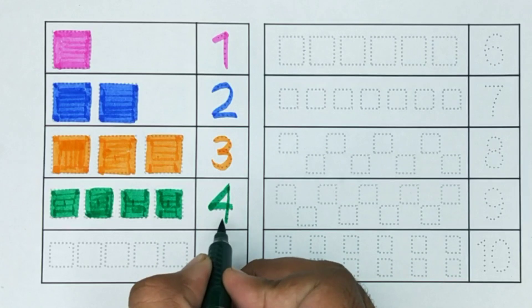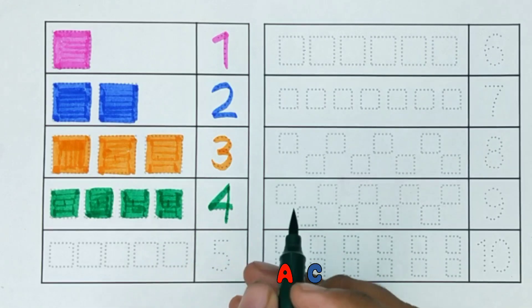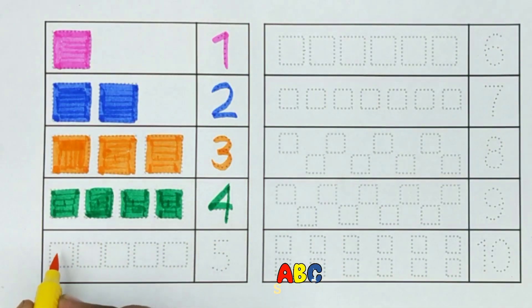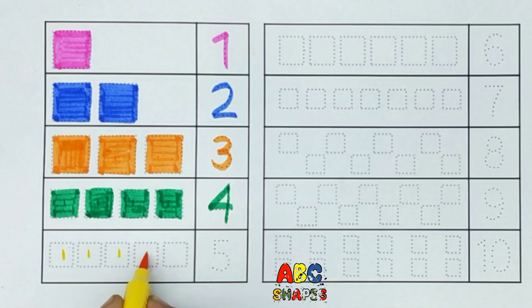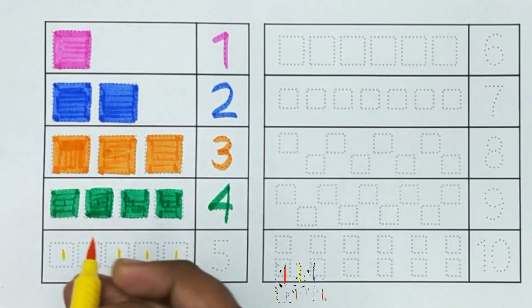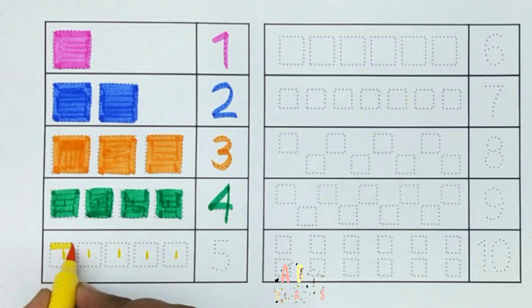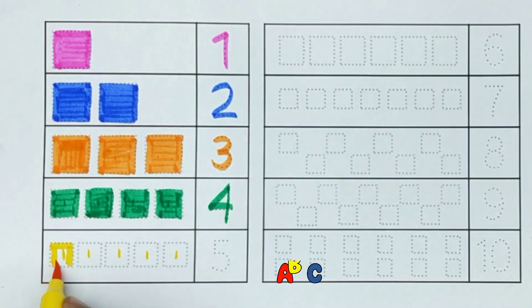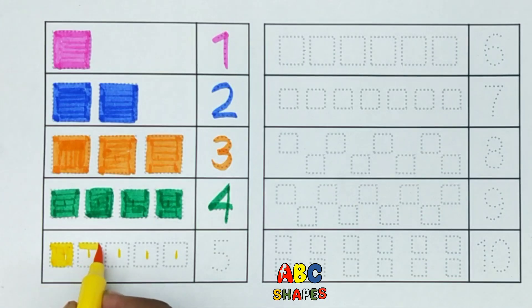4 squares. This is number 4. Next we have 1, 2, 3, 4, 5 — 5 squares.